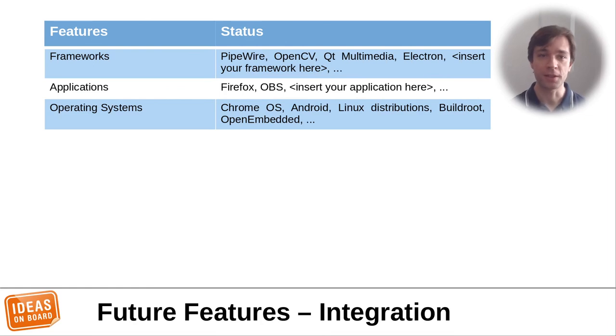LibCamera wouldn't be very useful, of course, if it wasn't integrated in frameworks, in applications, and in distributions. In the frameworks category, Pipewire is particularly in scope, but so are OpenCV, for instance, or Qt Multimedia, Electron, or just your favorite framework. On the application side, while Firefox already works with LibCamera using V4L2 emulation, native support would be much better. I was also very tempted to add native LibCamera support to OBS when recording this presentation, but unfortunately, we didn't have time to do so, and I hope that many other applications will also follow. On the operating system side now, we're packaged by Chrome OS, by BuildRoot, by Debian and Stable, too, and work is ongoing for Fedora as well. This one will take more time, but being included in Android AOSP is something that I'm really looking forward to.